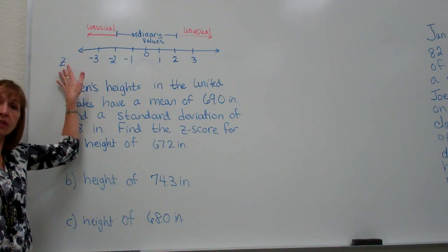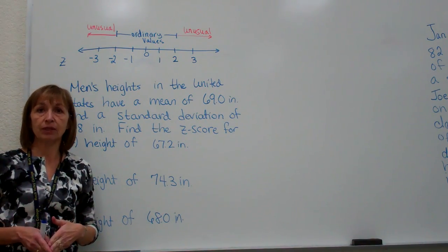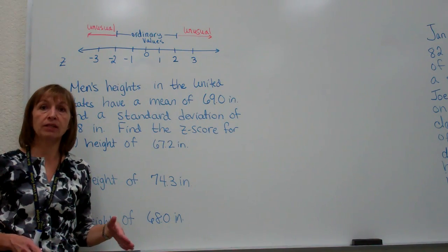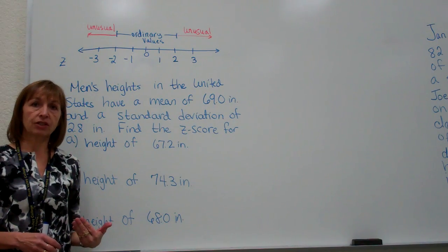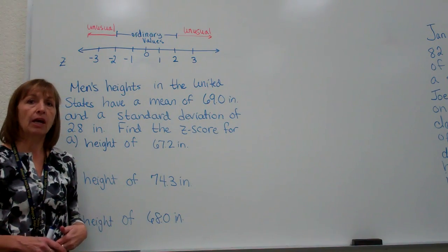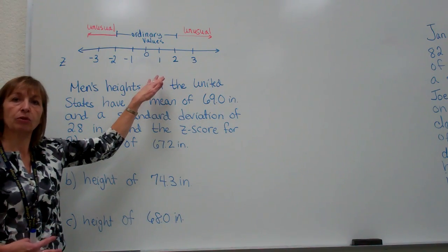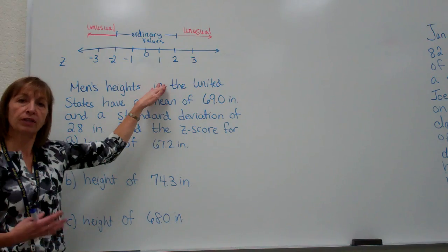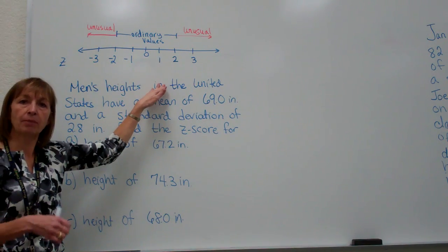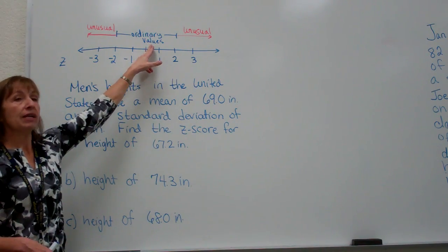Now a z-score tells you how many standard deviations a particular data value is away from the mean as well as what side of the mean it is. When we look at the number of standard deviations that a number is away from the mean, we can get a general impression of whether that data value is an ordinary data value from a population or whether it's an unusual data value.